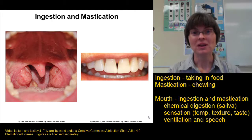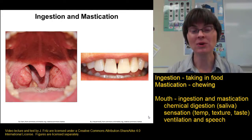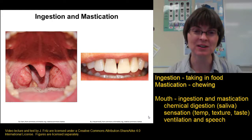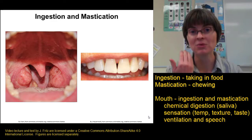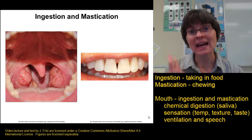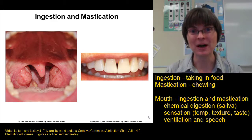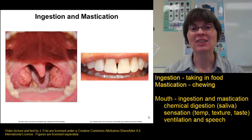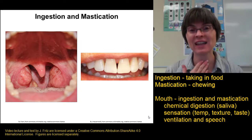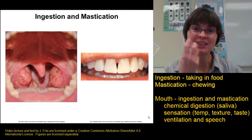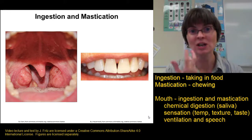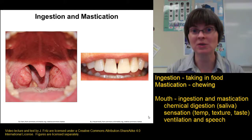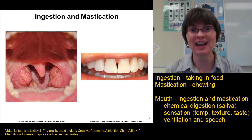The mouth is also important as part of the respiratory system — we can breathe through the mouth — and it's important for speech as well. The larynx provides the sound, but it's the mouth with the teeth, tongue, and lips that shapes that sound into words we can recognize as speech.